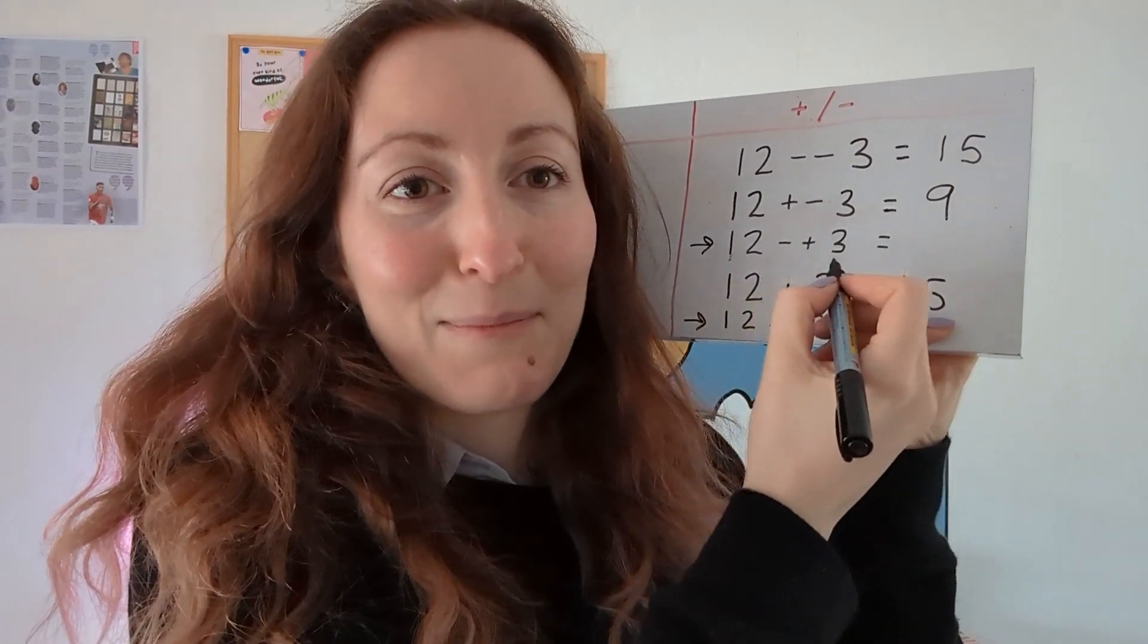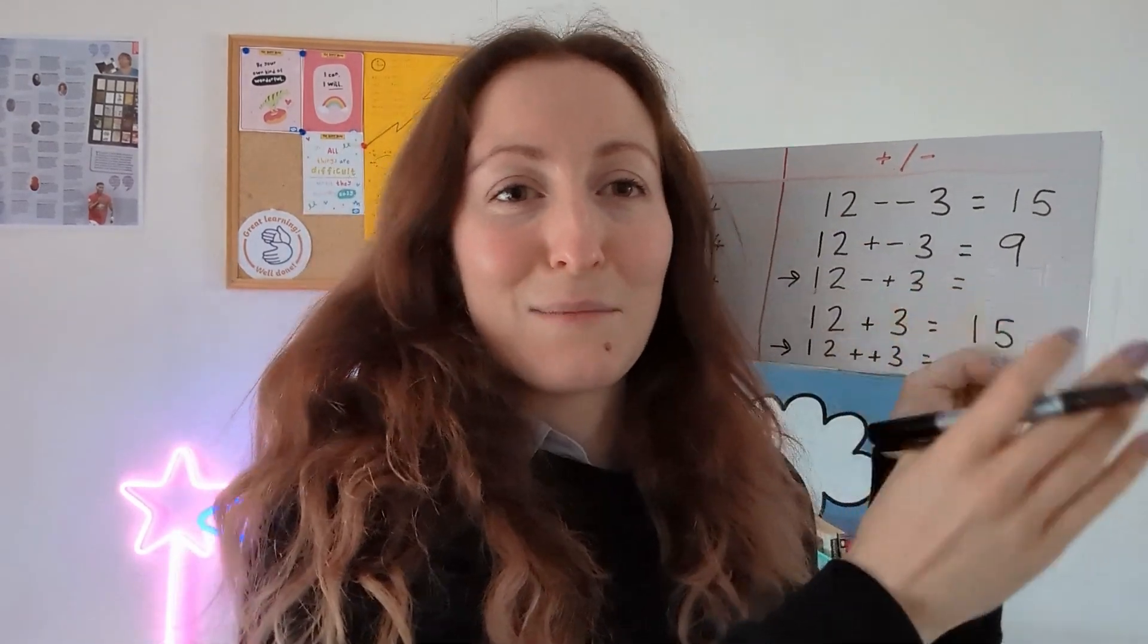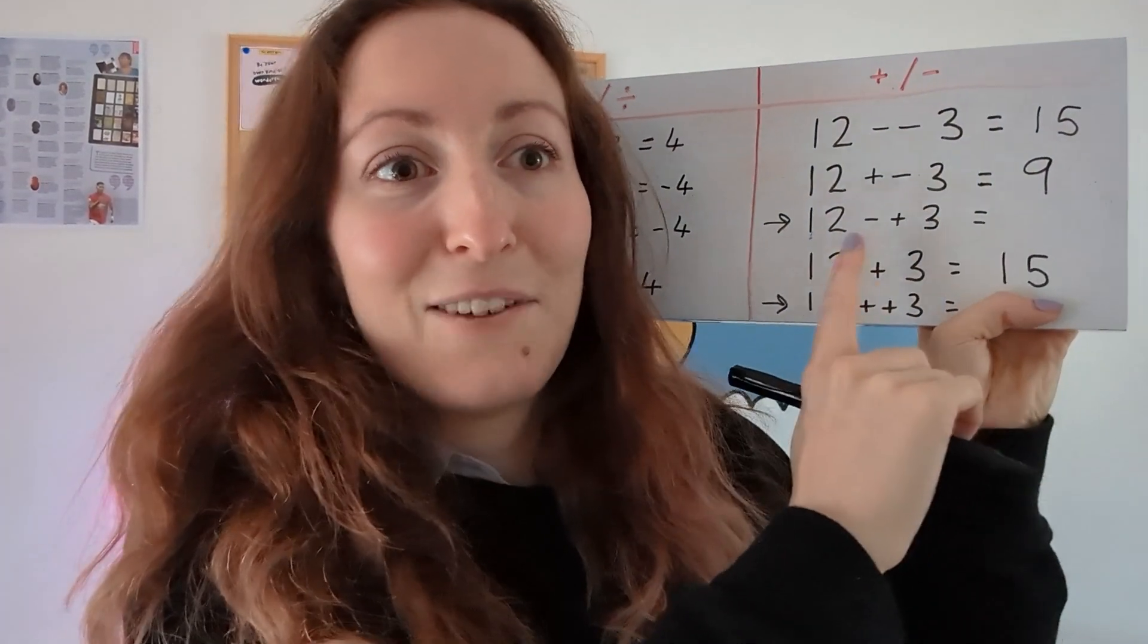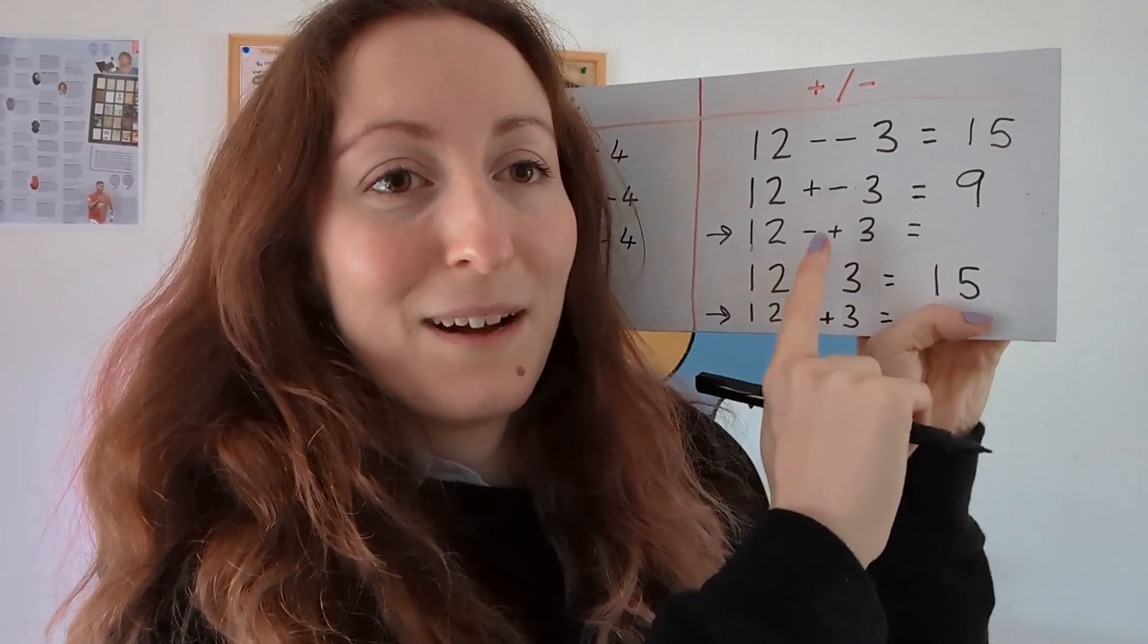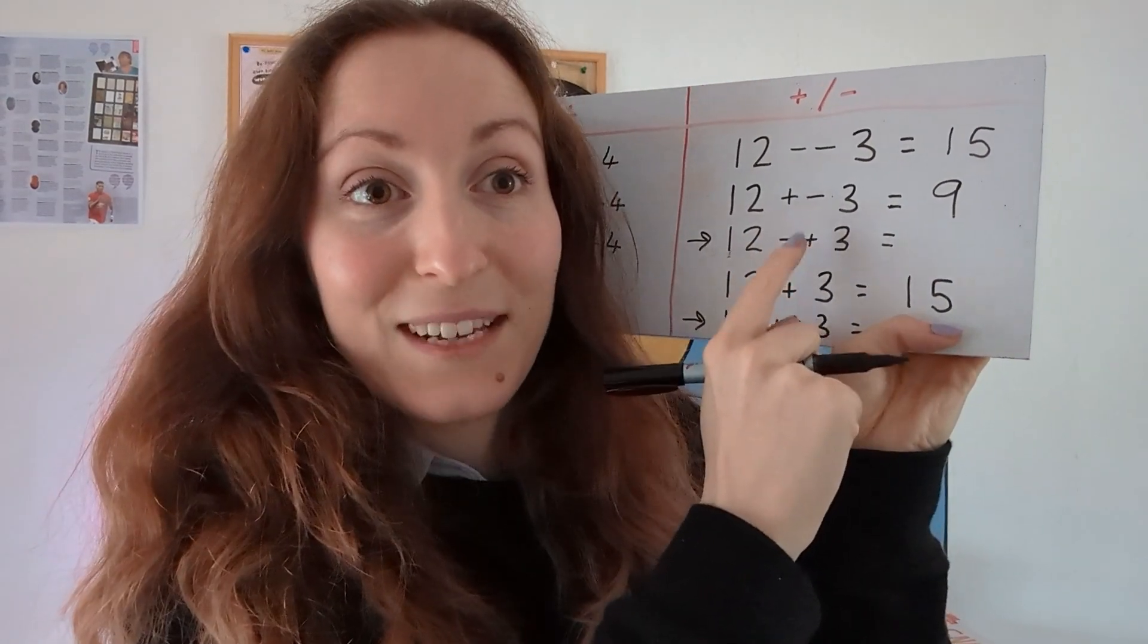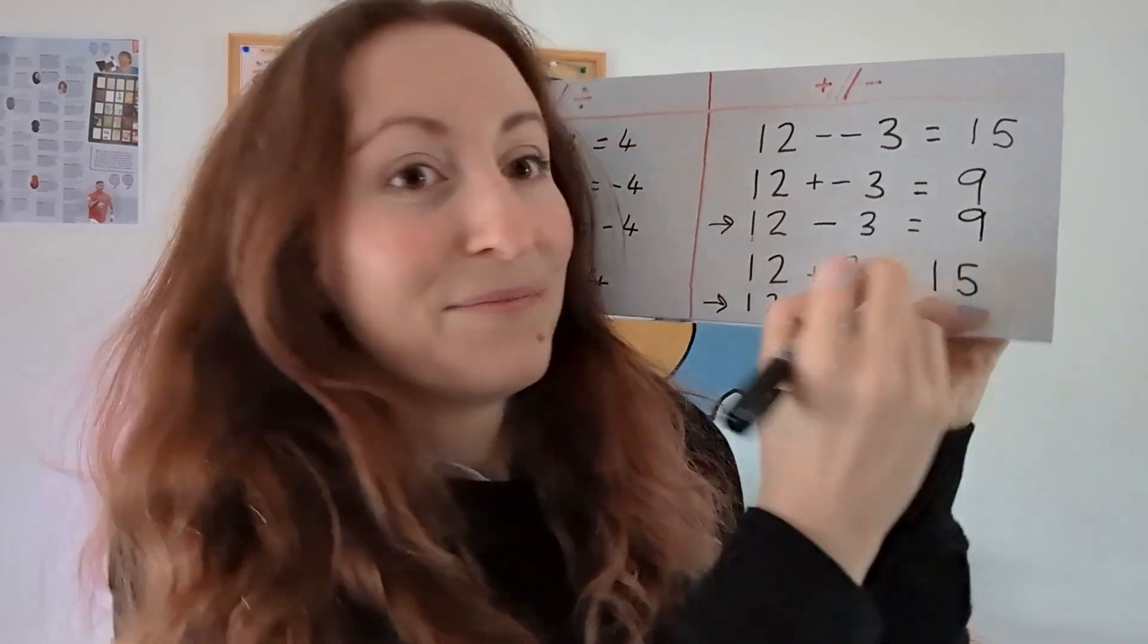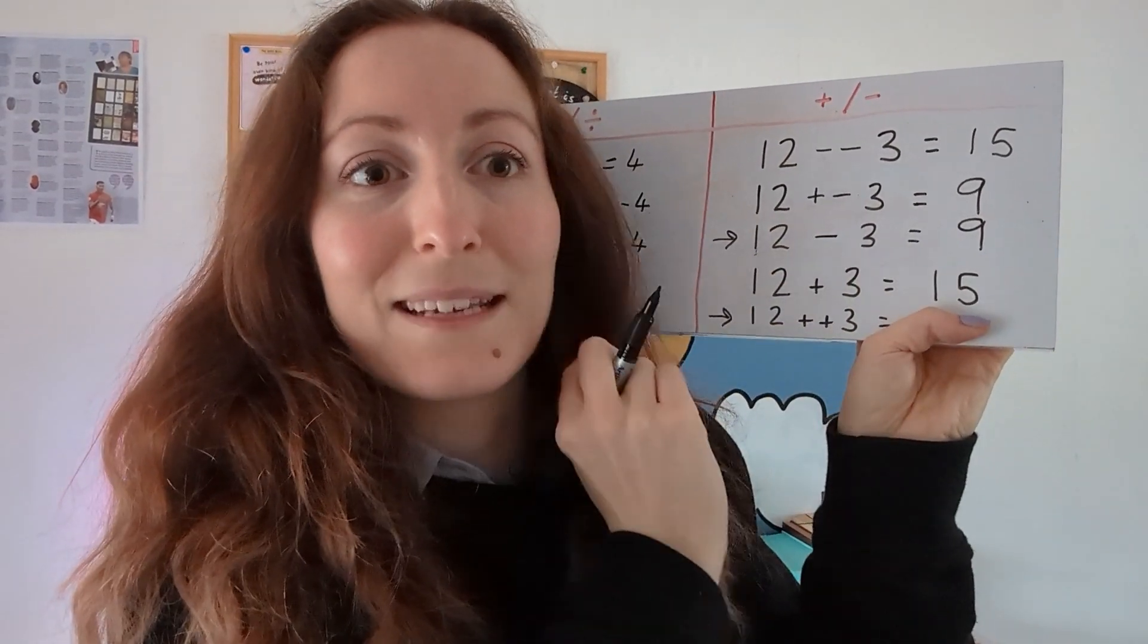Instead of writing 12 minus plus 3 we would just have 12 minus 3. You don't ever say I'm going to minus a positive 3 from 12 now. It doesn't happen. But if we did write maths like that, 12 minus plus 3, which we could, it still follows the same rule. So we have a negative and a positive and that would make a negative. So again the answer would be 9. And we know that 12 minus 3 is 9 so that makes sense.